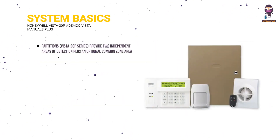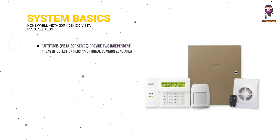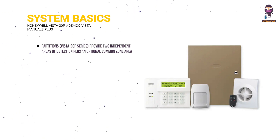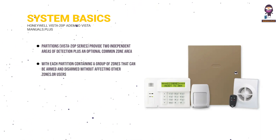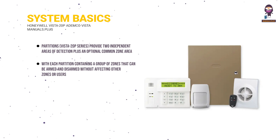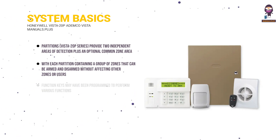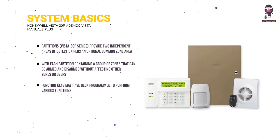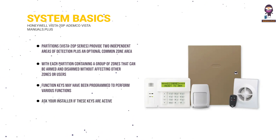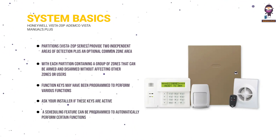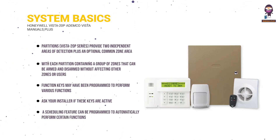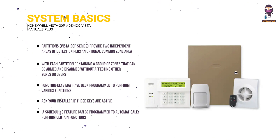Partitions, Vista 20P series, provide two independent areas of detection plus an optional common zone area, with each partition containing a group of zones that can be armed and disarmed without affecting other zones or users. Function keys may have been programmed to perform various functions. Ask your installer if these keys are active. A scheduling feature can be programmed to automatically arm the system at a predetermined time each day.